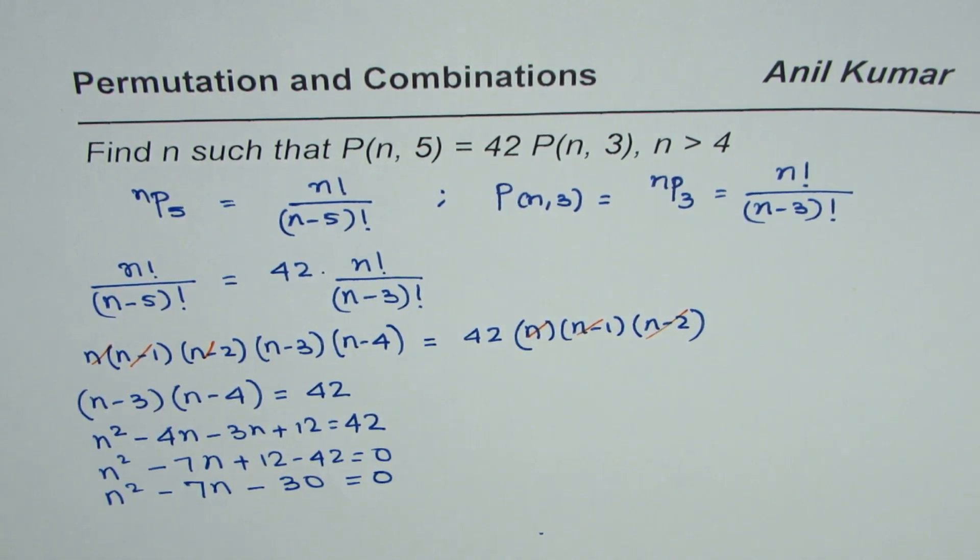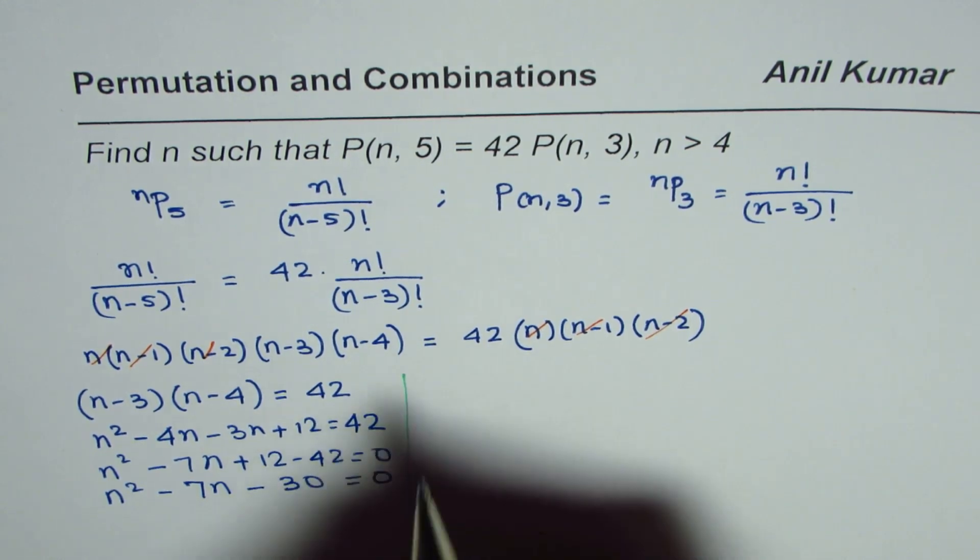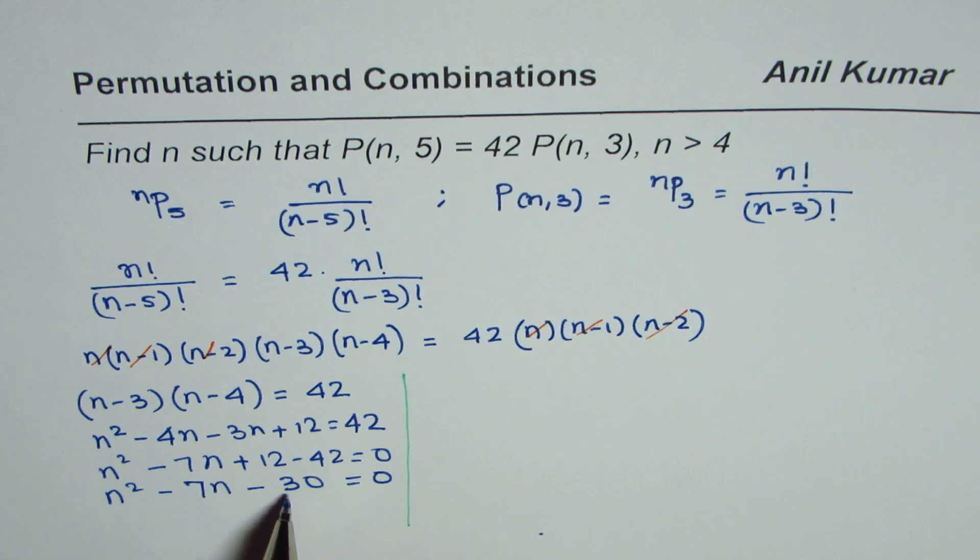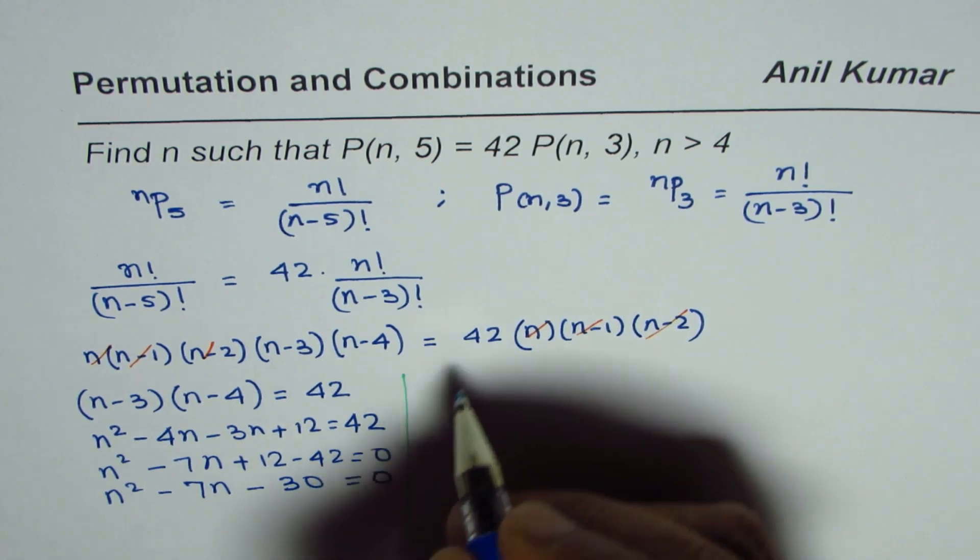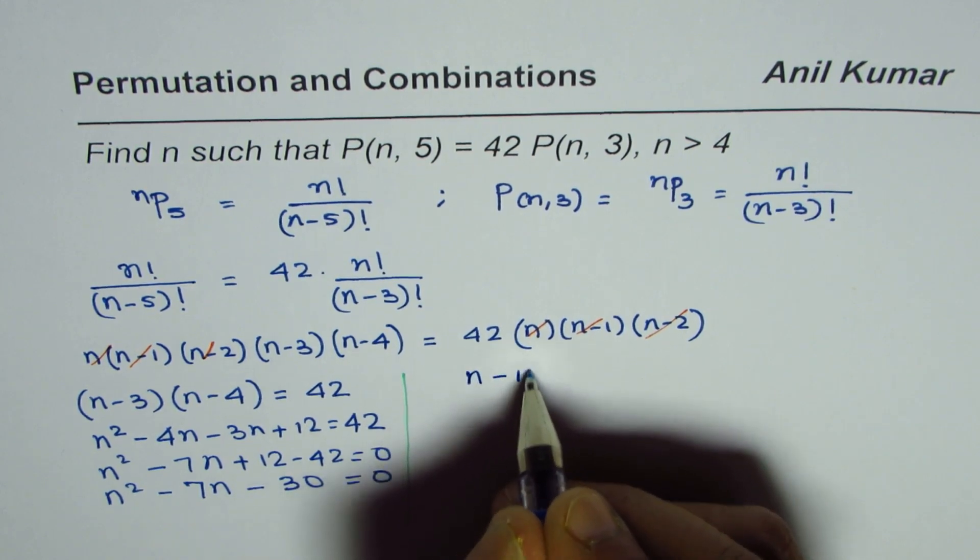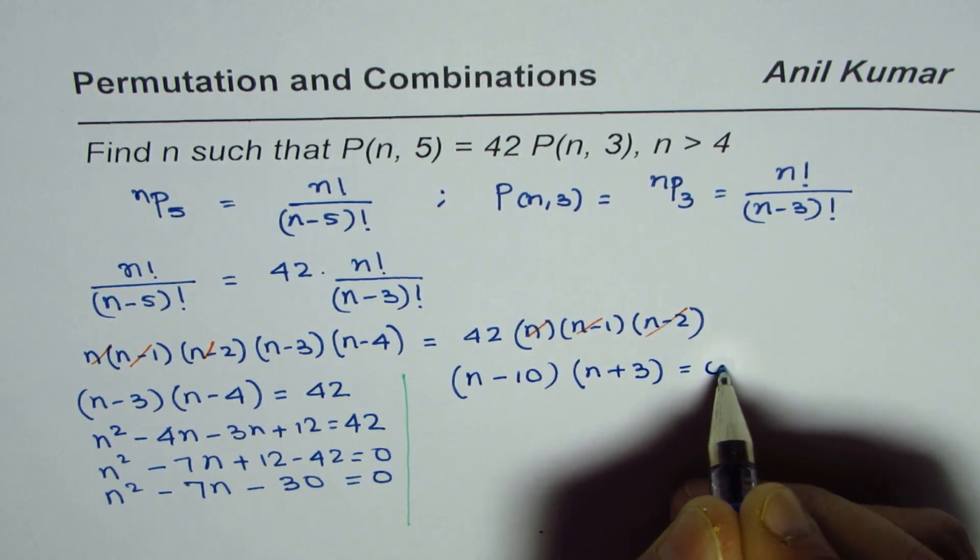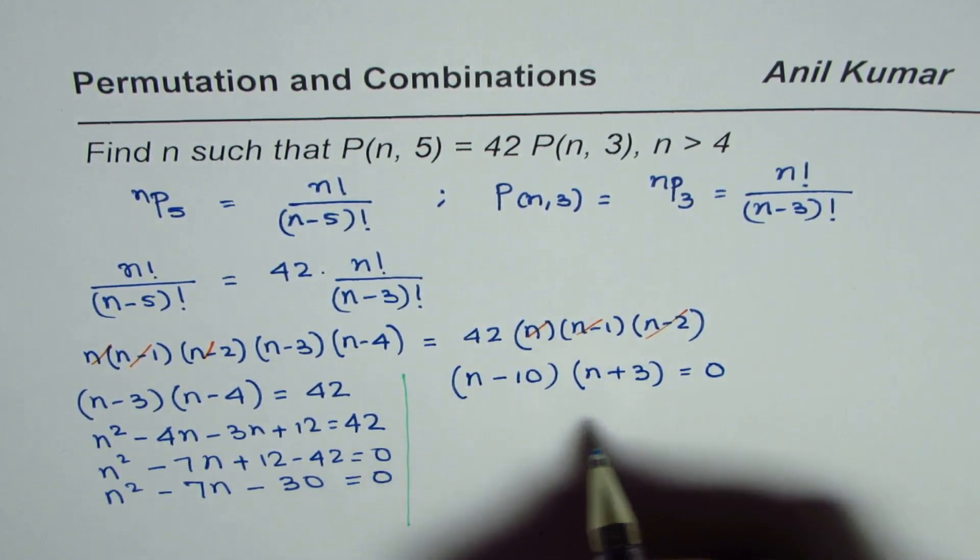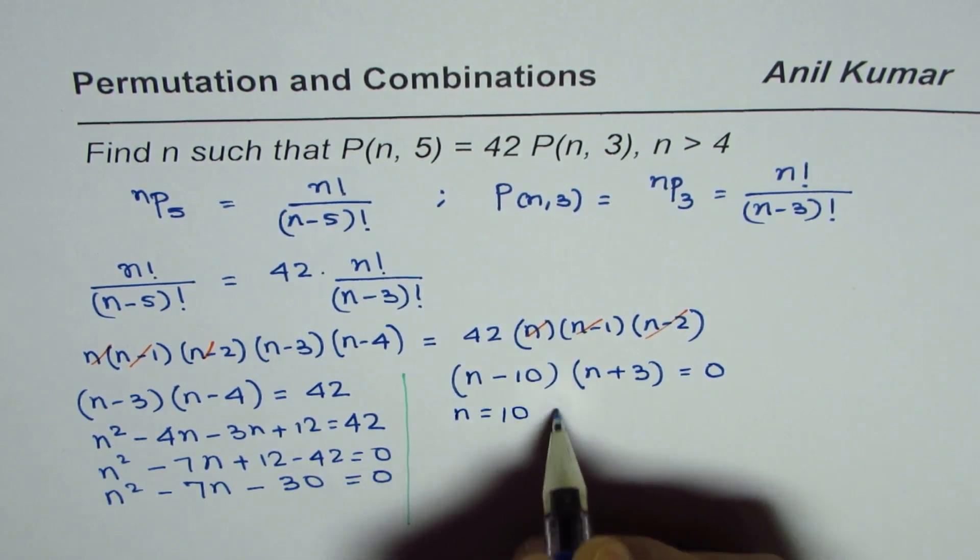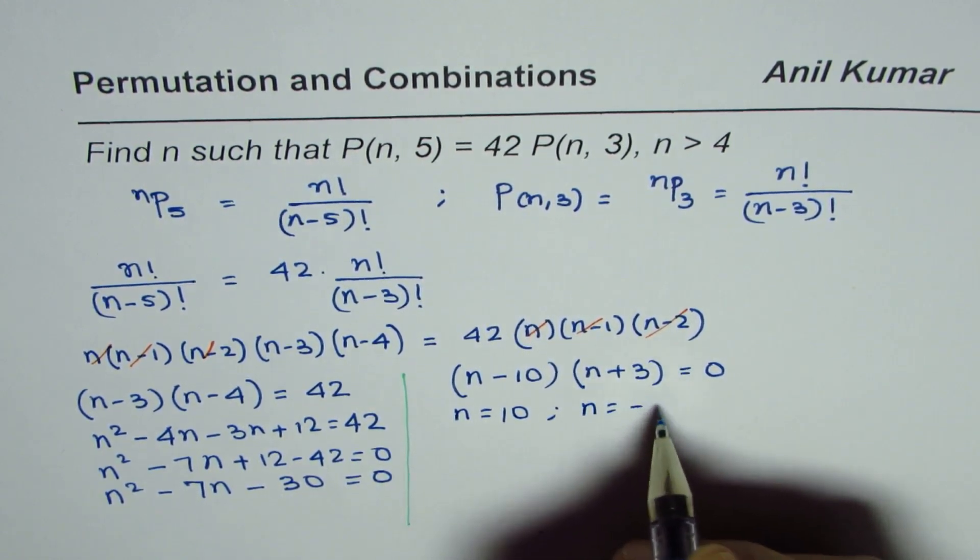Now let us solve this quadratic equation to find the value of n. Now we are looking for a product of 30 and a sum as -7. So it is -10 times 3. So we could write this as (n-10) times (n+3) equals 0. So that gives us two solutions. That is n equals 10 or n equals -3.